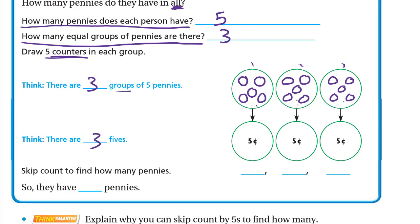Let's skip count to find how many pennies. One group is five, another five makes ten, and another five makes fifteen. So: five, ten, fifteen. They have fifteen pennies in total.